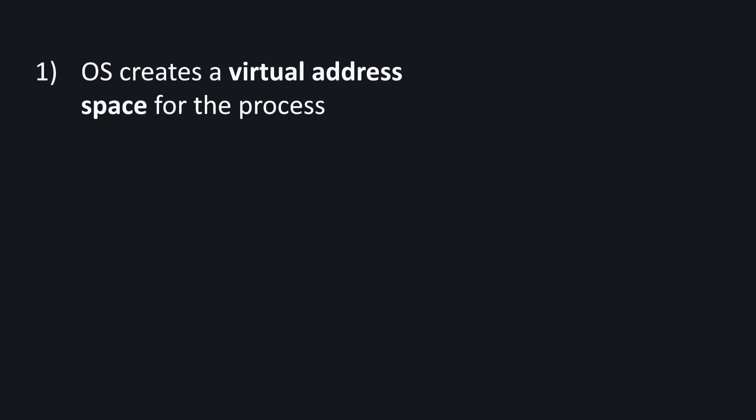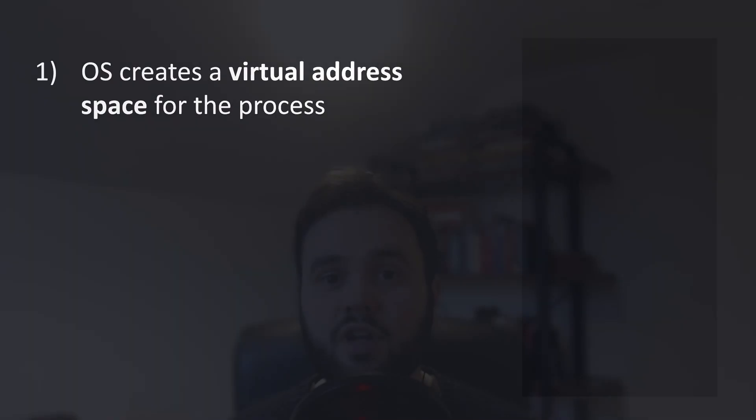In this video we'll take a deeper dive into the life cycle of the memory that your program will use while it's running. Let's start by looking at what happens when you first launch a program. The first step of this process is controlled by your operating system and it will allocate some virtual address space to use for the process.